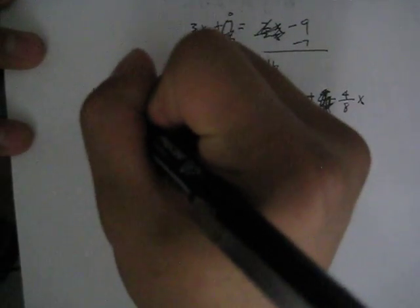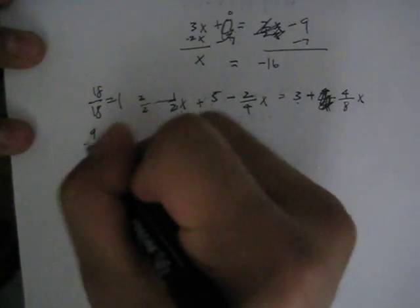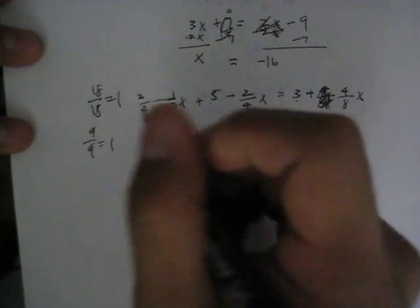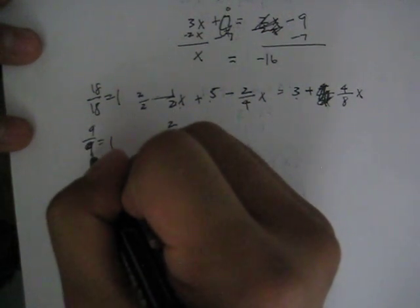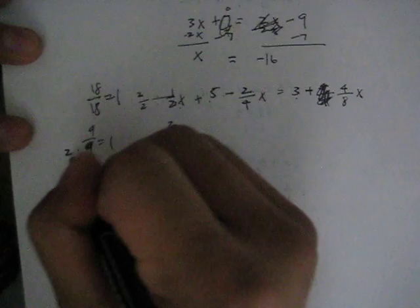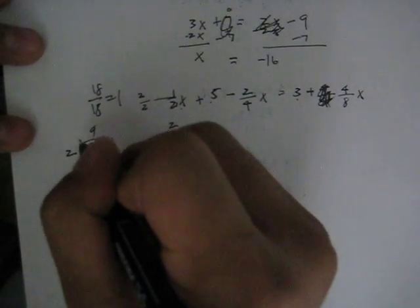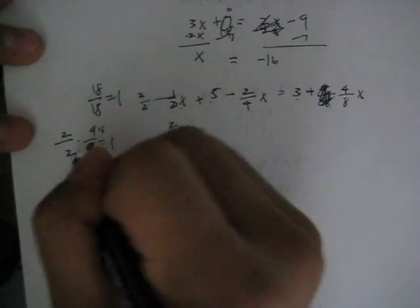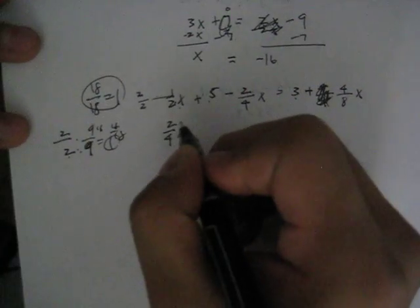For those of you that are unsure of how this works, 18/18 equals 1, correct? Or 9/9 equals 1. If you wanted to make this denominator 18, you multiply it by 2, right? So if you multiply the bottom number by 2, you also multiply the top number by 2. 2 times 9 is 18, 2 times 9 is 18, so 18/18 equals 1, which we showed here.